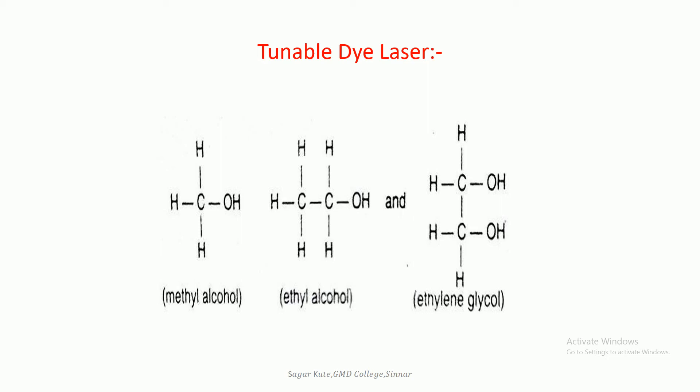Pulsed dye lasers are pumped by a flash lamp or other lasers and can produce up to 400 joules output in a 10 microsecond pulse. CW lasers are pumped by other CW lasers such as the argon ion laser and produce a power of about 2 watts. The gain of the dye lasing medium is very high, and a small volume of dye solution is sufficient to sustain lasing action.